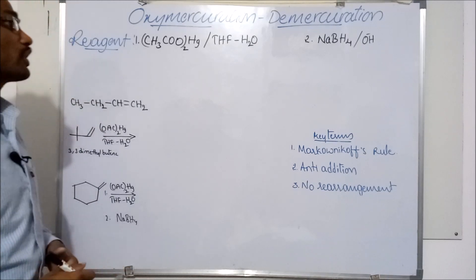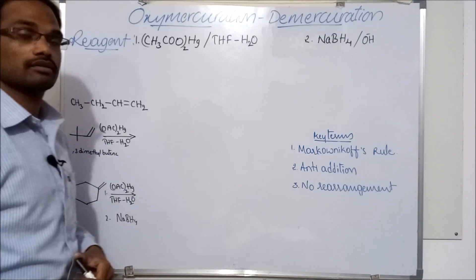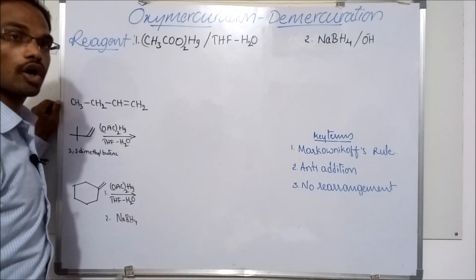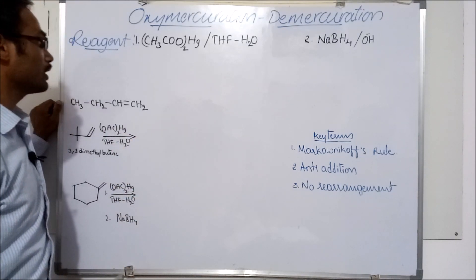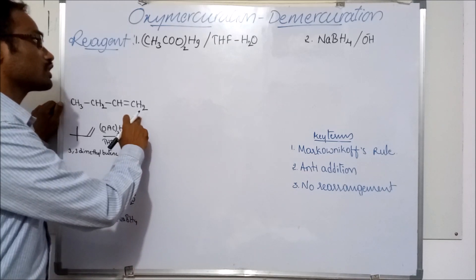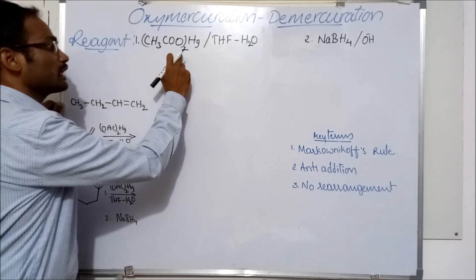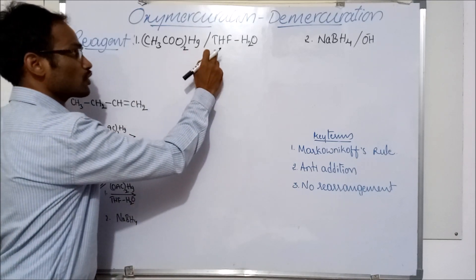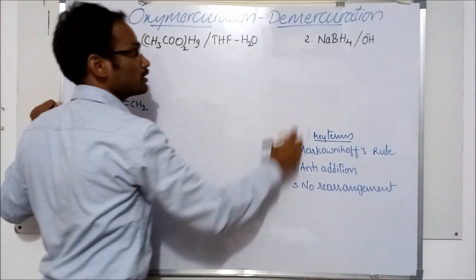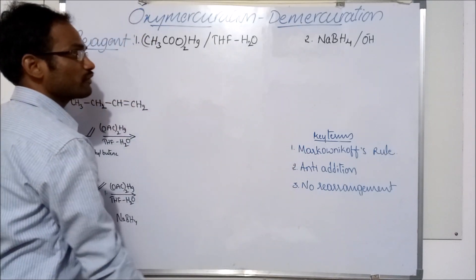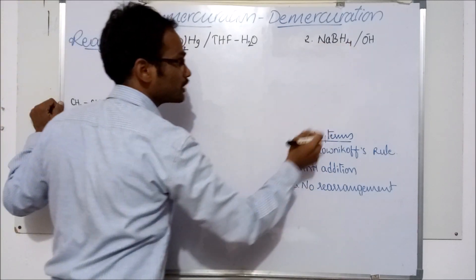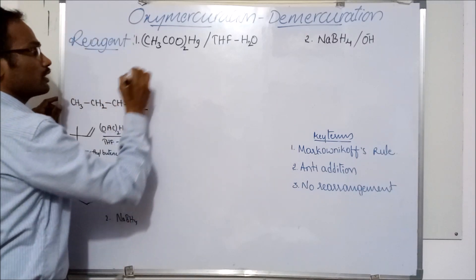Oxymercuration and demercuration method — this is one of the preparations of alcohols. In this method, alkenes are treated with mercuric acetate in the presence of tetrahydrofuran in water, followed by reduction with sodium borohydride in the presence of a base.